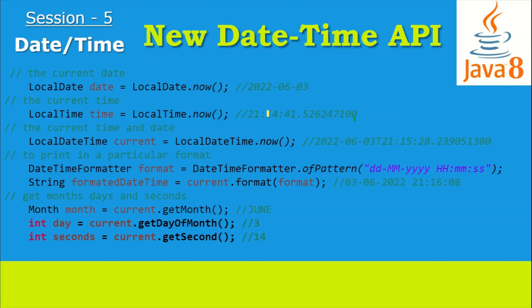Now suppose we want the date and time in a specific format. Earlier we used to use SimpleDateFormat, but in Java 8 they have provided DateTimeFormatter, where we specify which pattern we want. Then using the current date-time we just obtained, we call the format() method and pass that pattern formatter. This results in the date in the specific format required. We can also extract the month, day of month, and seconds as well.